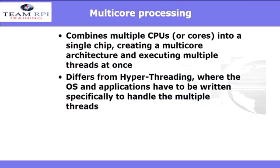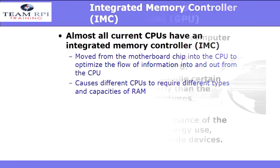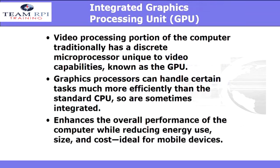Almost all modern CPUs have an IMC, or integrated memory controller. It's used to optimize the flow of information in and out of the CPU. Now, video processing — the graphics processing unit. Graphics processors can handle certain tasks much more efficiently than the standard CPU, and it enhances the overall performance of the computer by reducing energy use, size, and cost, which makes it ideal for mobile devices.